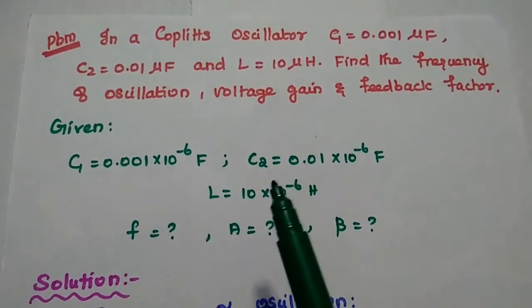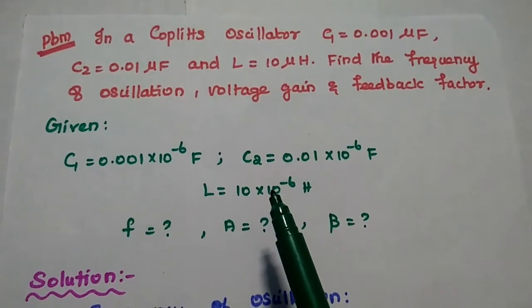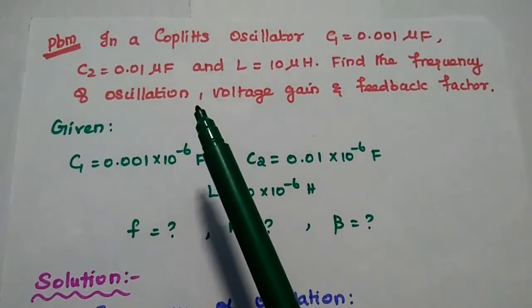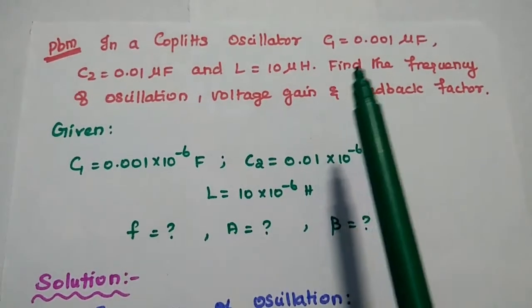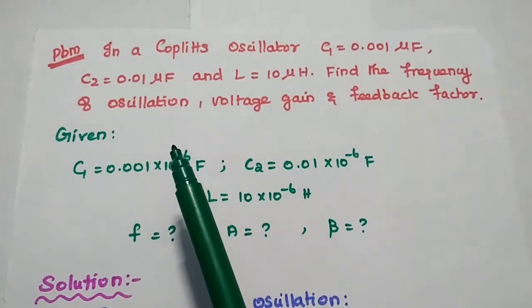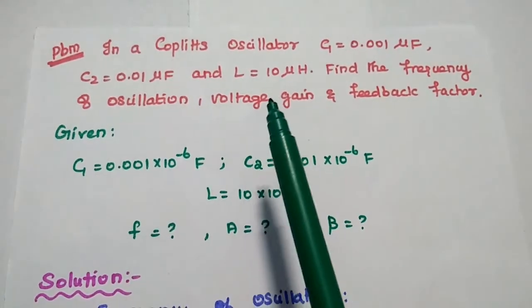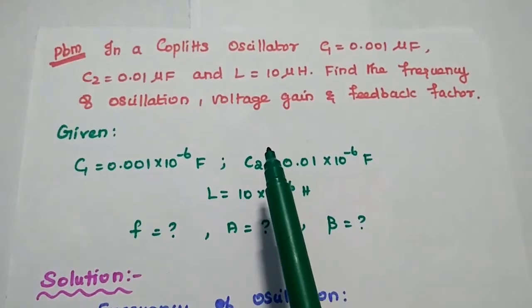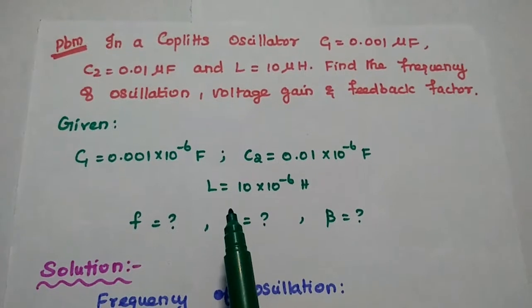Dear students, now we are going to solve important problems in Colpitts oscillator and Clapp oscillator. Here the first problem: in a Colpitts oscillator, C1 is equal to 0.001 microfarad, C2 is equal to 0.01 microfarad, and L is equal to 10 microhenry. Find the frequency of oscillation, voltage gain, and feedback factor.